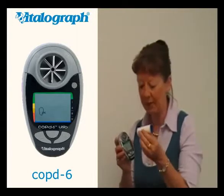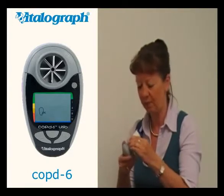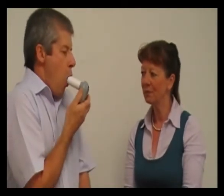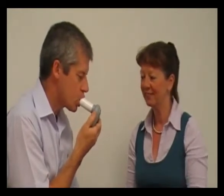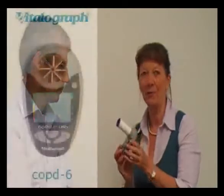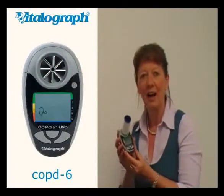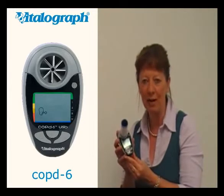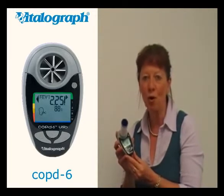Position a safety-way mouthpiece into the device and hand it to your subject. The subject is asked to take a maximum breath in and to blow into the device as hard and as fast as possible for six seconds. An exclamation mark will appear if the blow is unusable for any reason, such as a slow start or a cough.